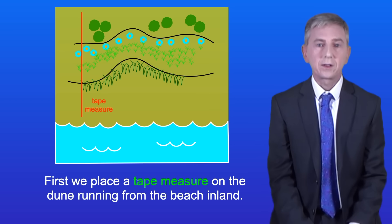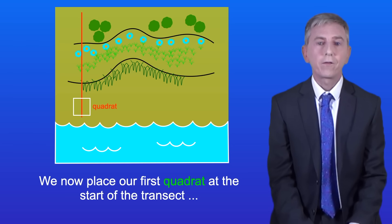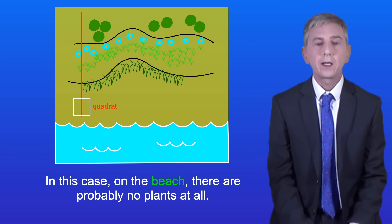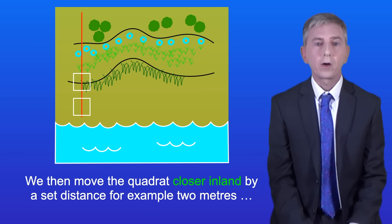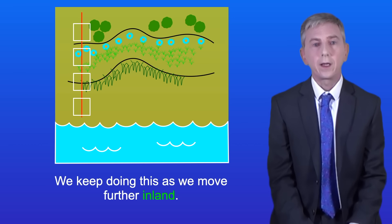First we place a tape measure on the dune running from the beach inland. We place our first quadrat at the start of the transect and count the different plants in the quadrat — in this case on the beach there are probably no plants at all. We then move the quadrat closer inland by a set distance, for example two meters, and count the number of plants again. We keep doing this as we move further inland.